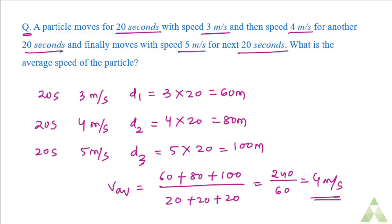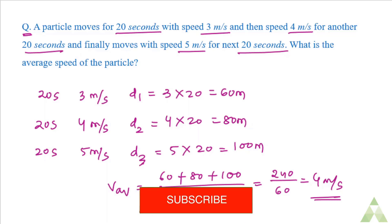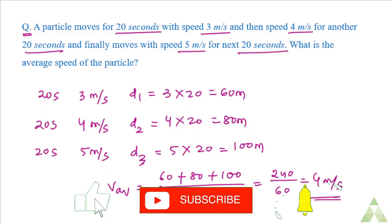The average speed may or may not be equal to one of the possible speeds of the particle — in this case it happened to equal 4 m/s, one of the three speeds. This is how you can do these simple calculations based on the concepts of speed, average speed, distance, and time.